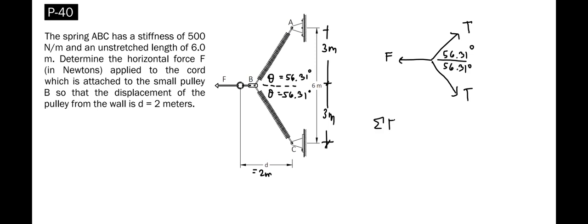By taking summation of forces horizontal equal to zero, we have negative F plus T cosine of 56.31 degrees plus another T times cosine of 56.31 degrees, all equal to zero. So we can represent F in terms of T, that is equal to twice T cosine of 56.31 degrees. This serves as our first equation.